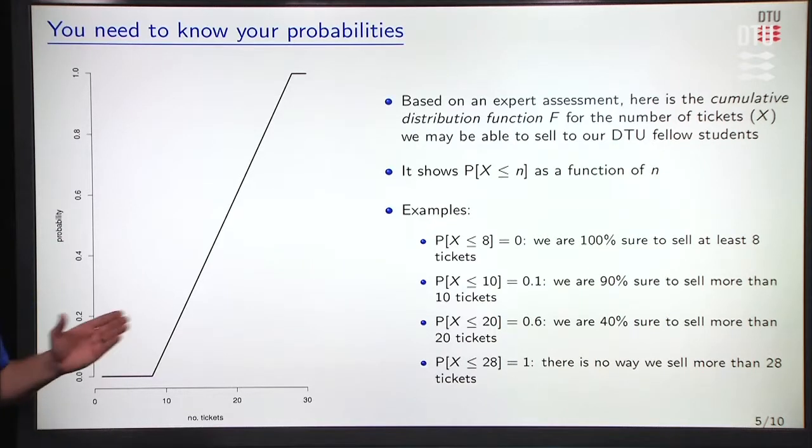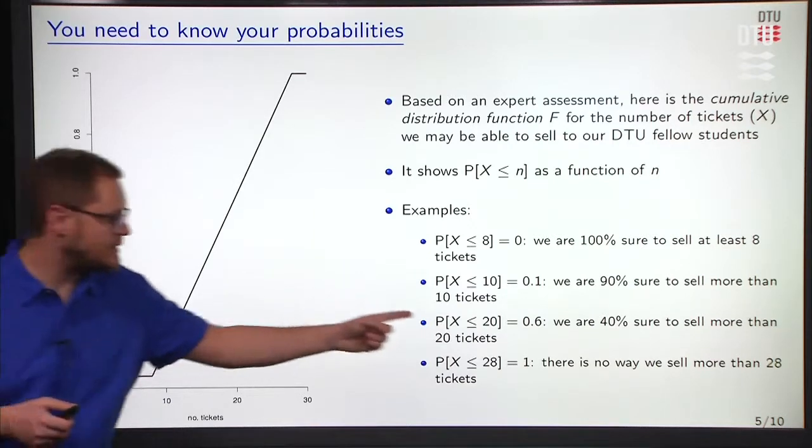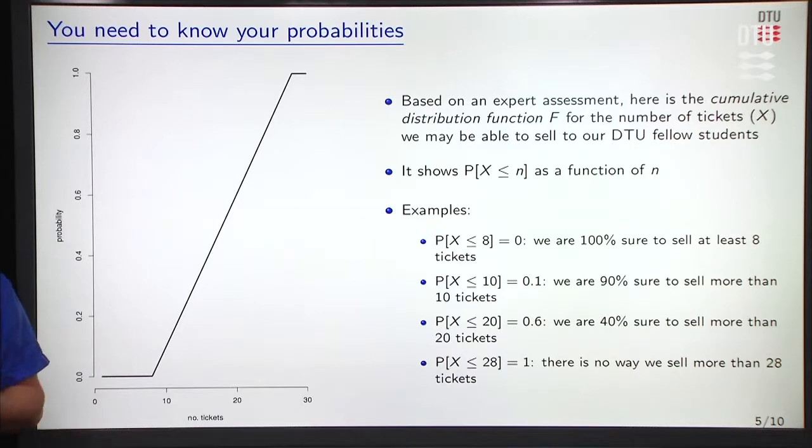Here are some examples of how to interpret this CDF here. The CDF starts at 0 here until N equal to 8. So that means the probability that X is less or equal to 8 is 0. We are 100% sure we would sell at least 8 tickets. Then, the probability that X is less or equal to 10 is equal to 0.1. We are 90% sure to sell more than 10 tickets. The probability that X is less or equal to 20 is equal to 0.6. We are 40% sure to sell more than 20 tickets. And eventually, in view of this plateau up there, the probability that X is less or equal to 28 is equal to 1. So that means we are sure that we cannot sell more than 28 tickets.